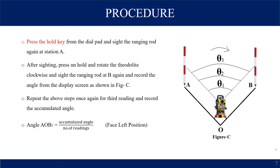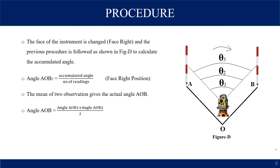This gives the angle in the face left position. Now you have to change the face to the right position and rotate the telescope to 180 degrees. Repeat the same procedure in face right position to get angle A-O-B 2, which is the accumulated angle divided by number of readings. The mean value will be angle A-O-B 1 plus angle A-O-B 2, divided by 2.